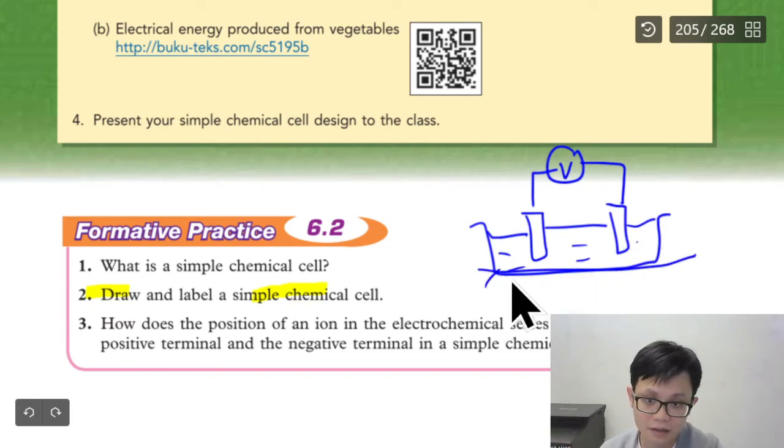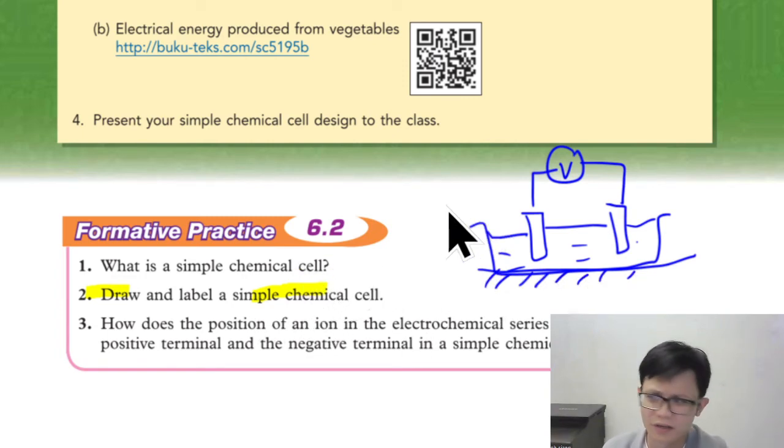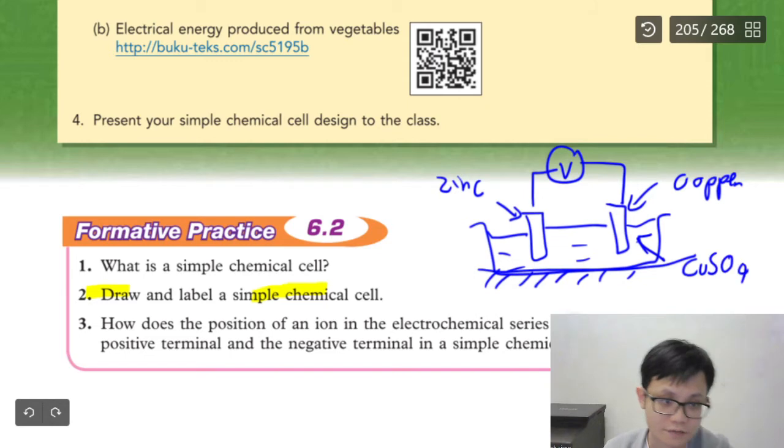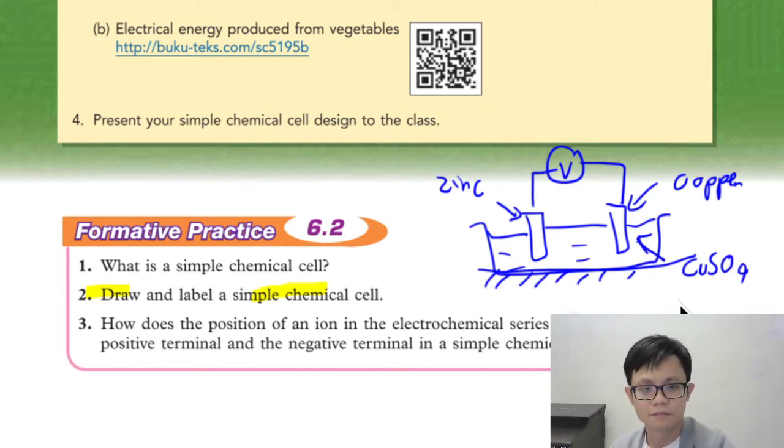Let's say the question asks us to label. So you just use two different metals. Maybe I just put zinc and copper. Zinc and copper. Or maybe this one, I put copper sulfate solution. Of course, you draw nicely. Don't draw like me.